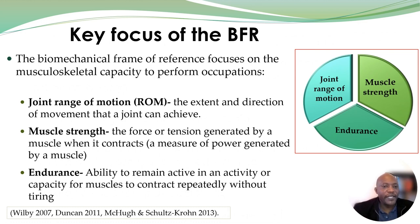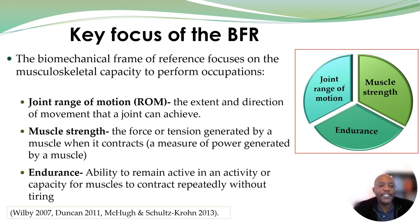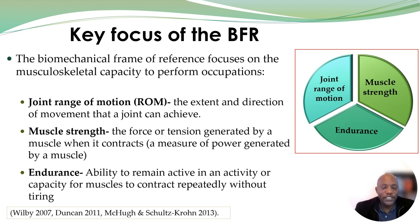Moving on to the key focus of this frame of reference, it mainly focuses on the musculoskeletal capacity to perform occupation. The three major aspects are: joint range of motion, meaning the extent and direction of movement that a joint can achieve; muscle strength, that's the force or tension generated by a muscle when it contracts, also referred to as a measure of power generated by a muscle; and endurance, being the ability to remain active during an activity or the capacity for muscles to contract repeatedly without getting tired.